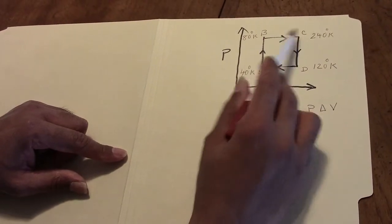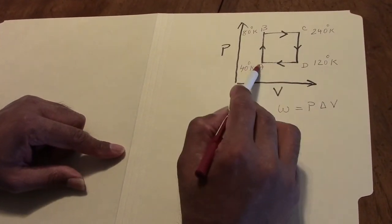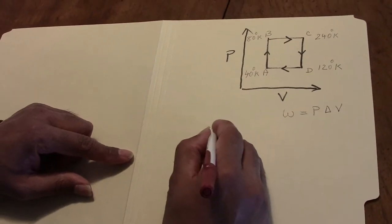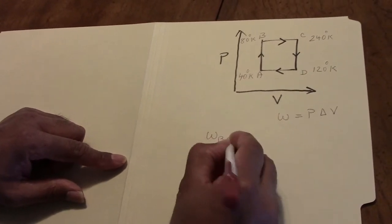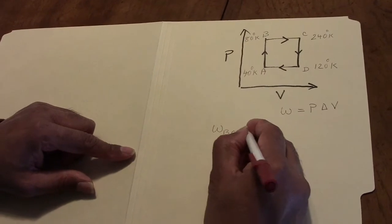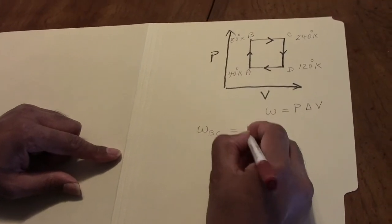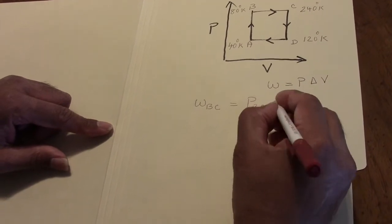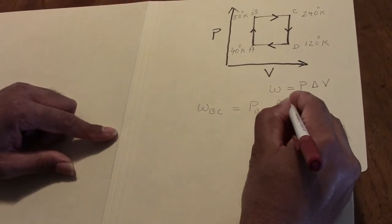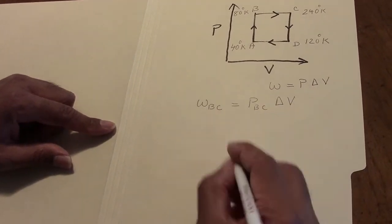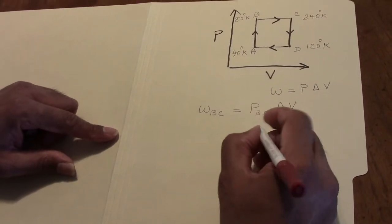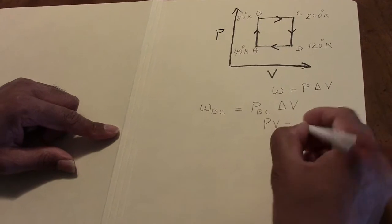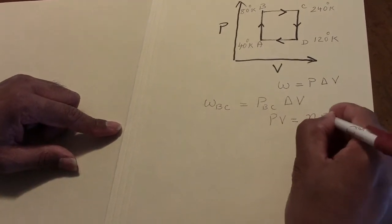So the work is done between B and C and D and A. The work done along the path BC is given by the pressure along BC times the change in the volume. We know the ideal gas equation tells us that PV, or pressure times volume, is NRT,